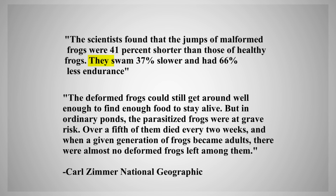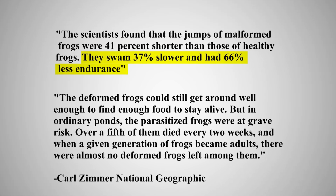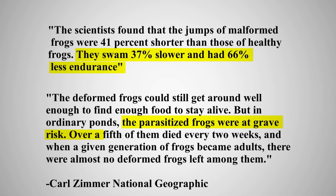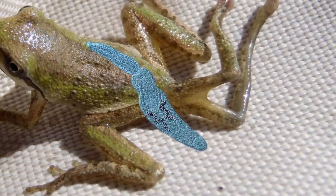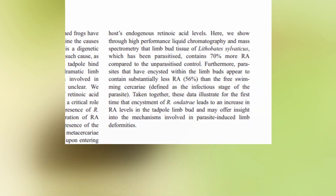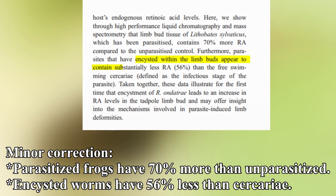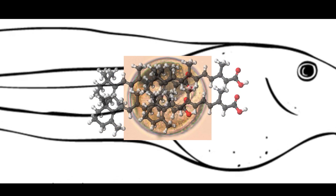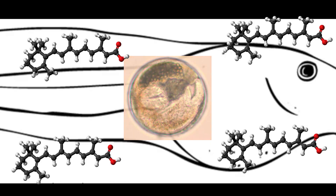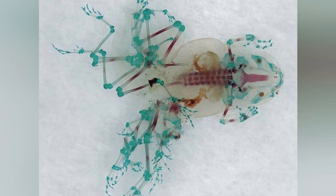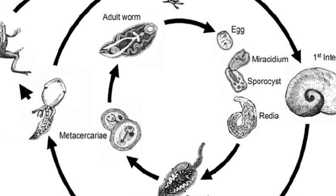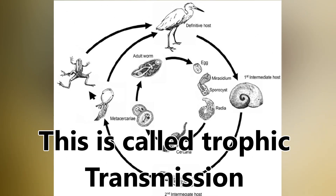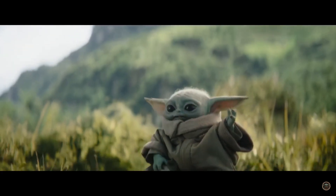In fact, one study found that infected and deformed frogs swam 37% slower and had 66% less endurance, which is a pretty huge deal when you're trying to escape a predator. For a long time, it was believed that these deformities were primarily a result of the cyst physically disrupting the limb buds. However, recent studies show that the parasites are actually more nefarious than that. Encysted worms have 70% less retinoic acid — a derivative of vitamin A — than cercariae, which is believed to be a sign that they are actually secreting this retinoic acid into the frog during its development. Retinoic acid is a crucial signaling molecule during vertebrate development, and this is believed to be causing these deformities, lending credence to the theory that these parasites are purposefully inducing deformities to aid in getting back to their next host — i.e., being eaten by a bird.